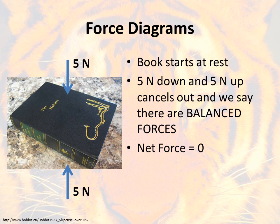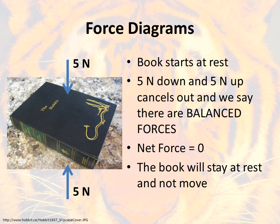Anytime forces are balanced, the net force is going to be zero because there's no difference between the forces. It's like saying positive five minus five — it comes out to zero, they cancel. In this example the book started at rest and the book will also stay at rest. It will not move, it will not change its motion because the forces are balanced. When forces are balanced, whatever the object was doing it's going to keep doing that same thing.